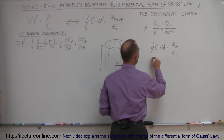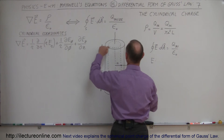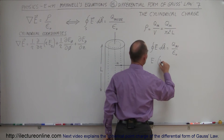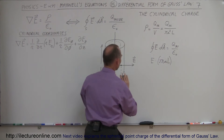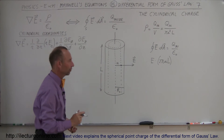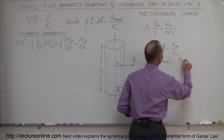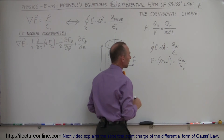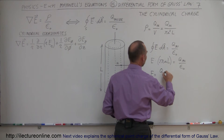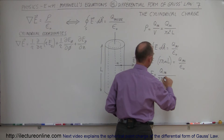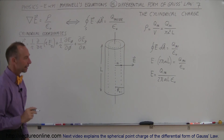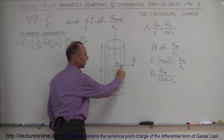The electric field strength times the surface area — which is the circumference 2 pi A times the length — equals Q inside divided by epsilon sub naught. Therefore, to find the electric field strength, E is equal to Q inside divided by 2 pi A L times epsilon sub naught. So now we have the electric field strength at this location inside the cylinder.